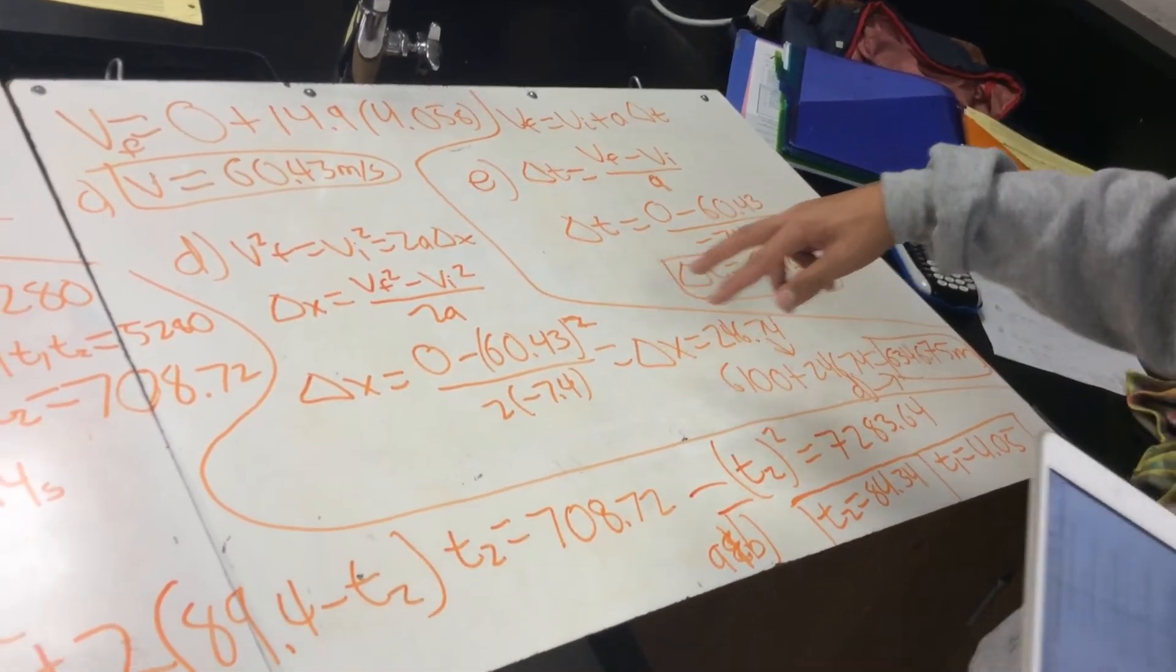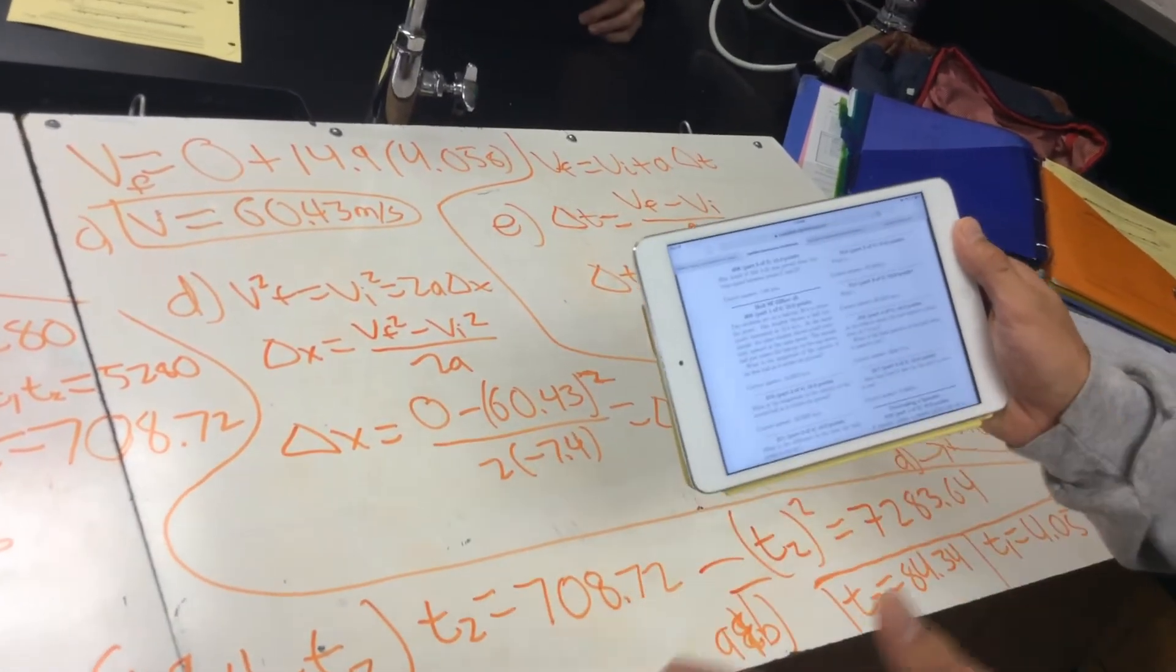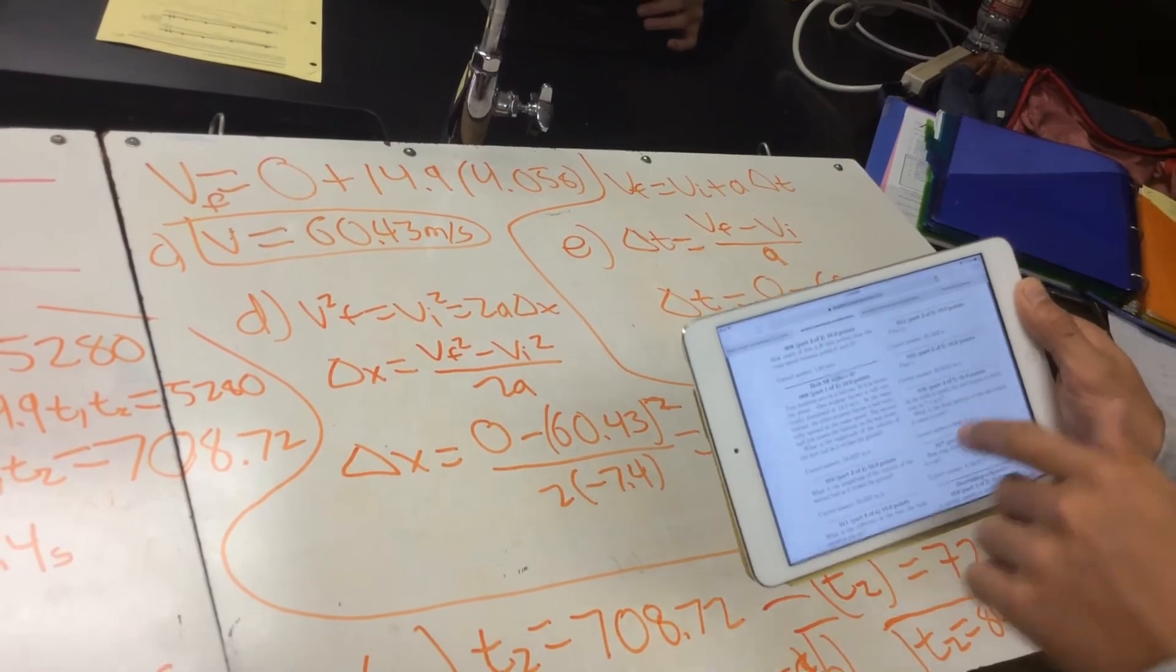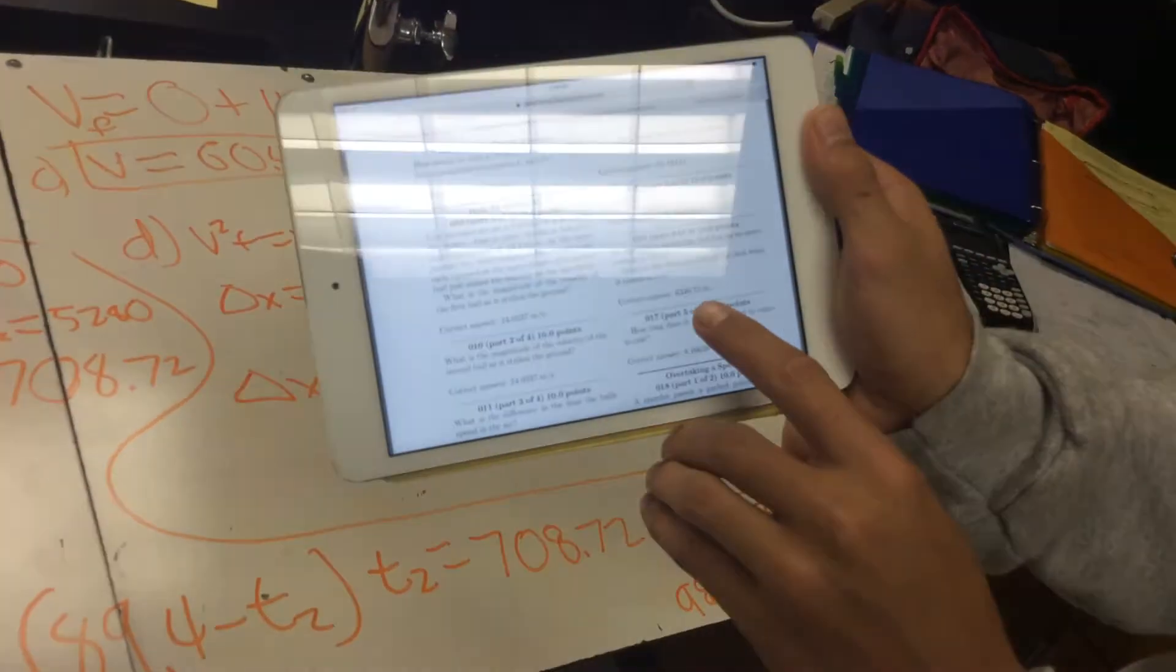So basically, you're just finding the displacement once it started decelerating, and then add that to 6,100 meters, and you'll get the final position, which is 6,346.